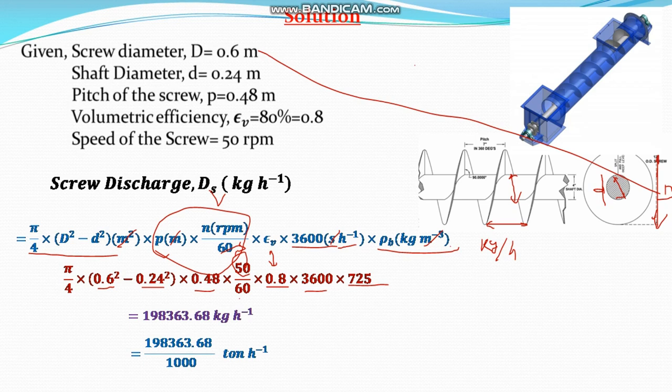The capacity in ton per hour will be equal to 198,363.68 divided by 1000 that will be equal to 198.36 ton per hour is the answer for this question.